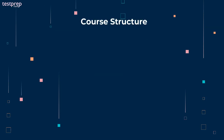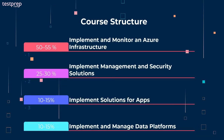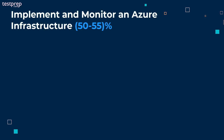Let's discuss about course structure. Number one, implement and monitor an Azure infrastructure, which comprises 50 to 55% weightage in the exam. Number two, implement management and security solutions, which comprises 25 to 30% weightage. Number three, implement solutions for apps, which comprises 10 to 15% weightage. Number four, implement and manage data platforms, which comprises 10 to 15% weightage.